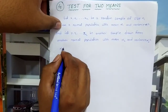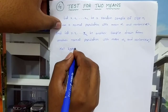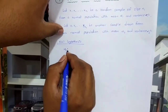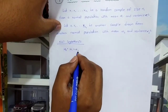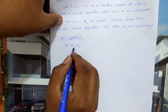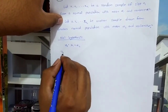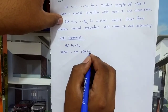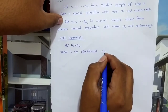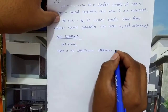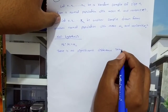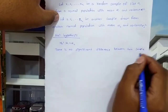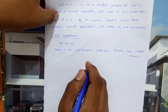Null hypothesis H0: mu1 equal to mu2. This means there is no significant difference between the 2 sample means.